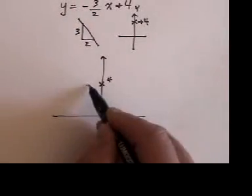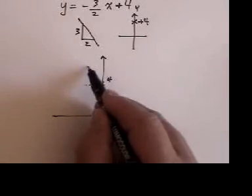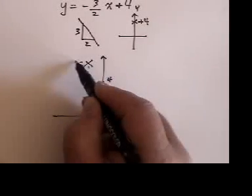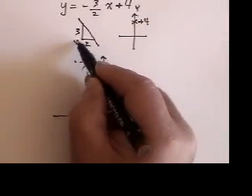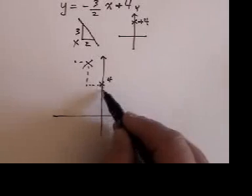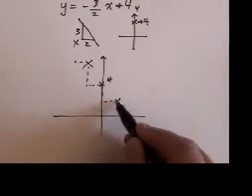So, I'm going to go over 2 and up 3 and put an x. Over 2, up 3, put an x. Or down 3 and over 2, put an x.